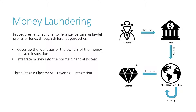Money laundering activities generally involve three main stages: placement, layering, and integration, representing integrating the illicit fund into the financial system, layering transactions to cover the origin and transferring it out for usage.